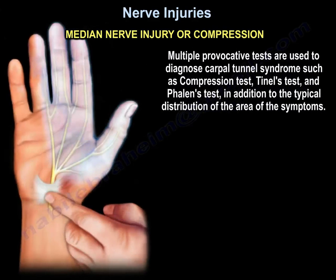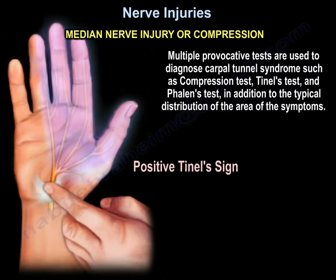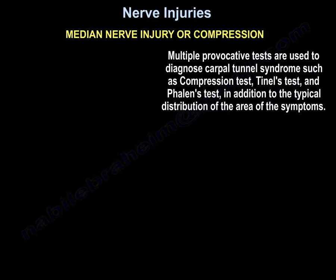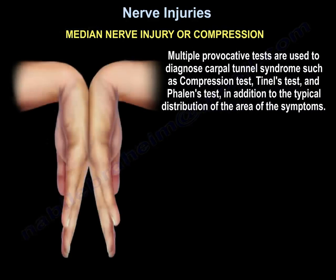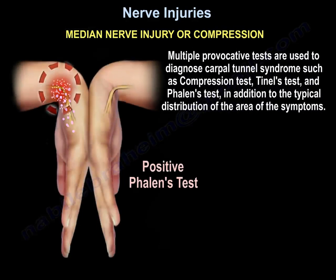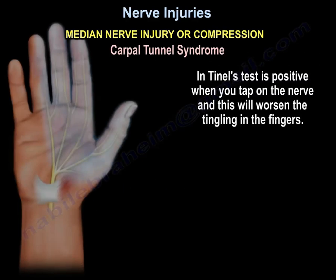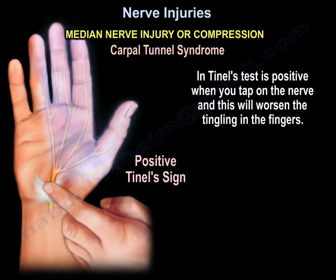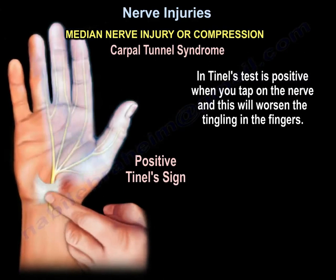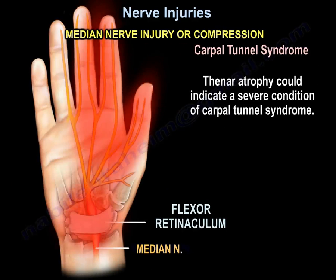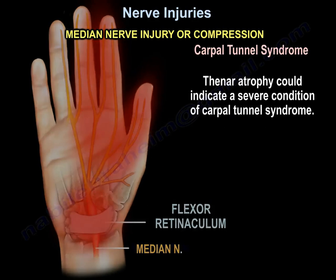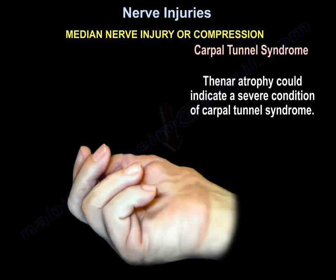Multiple provocative tests are used to diagnose carpal tunnel syndrome, such as compression test, TANELS test, and Fallon test, in addition to the typical distribution of the area of the symptoms. TANELS test is positive when you tap on the nerve, and this will worsen tingling of the fingers, as you can see here in this diagram. Thenar atrophy could indicate a severe condition of carpal tunnel syndrome.